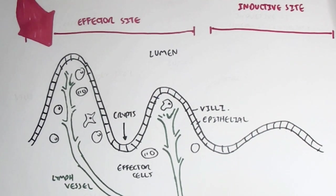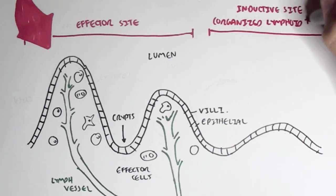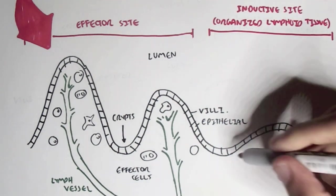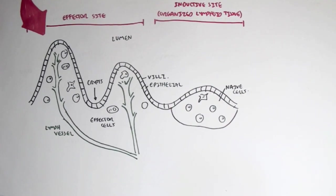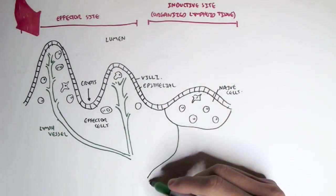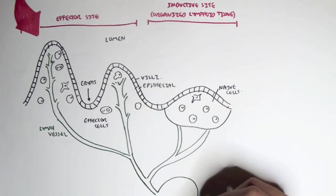The lymph vessels connect to the mesenteric lymph nodes. And then the other important site is the inductive site, which is also referred to as the organized lymphoid tissue. Typically, the inductive sites do not contain the effector cells, the activated lymphocytes. They usually contain the naive lymphocytes. But they also contain many antigen presenting cells such as dendritic cells. Because the inductive site is where they induce, typically where the mucosal immune system is induced from the antigen presenting cell, which can then activate the naive lymphocytes.